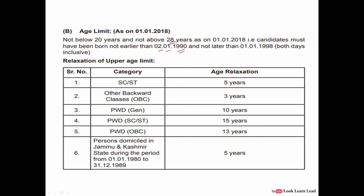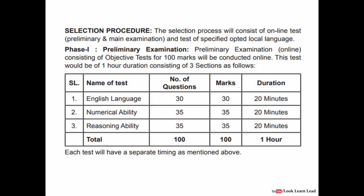Both dates are inclusive. For relaxation: SC/ST get 5 years, OBC gets 3 years. For PWD general there is 10 years relaxation, PWD SC/ST gets 15 years, and PWD OBC gets 13 years.